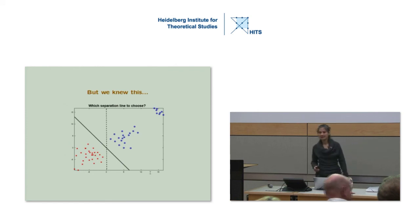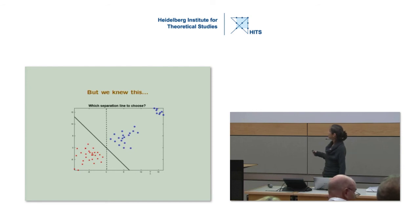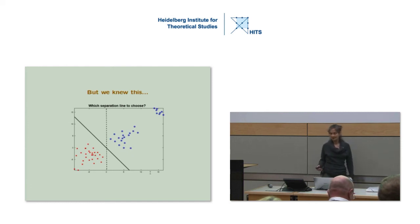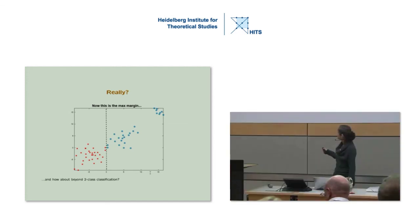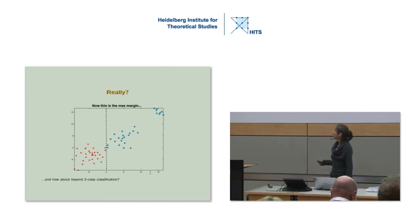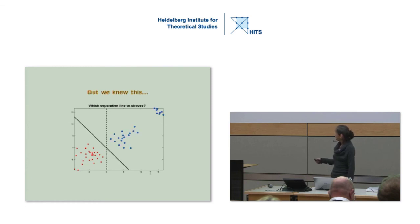You can say we already knew this, at least for two-class classification. Every textbook tells you to separate them by the maximum margin—that's what the SVM is doing. Well, yes, but not always. This is exactly the same data set with four more points added. If we go for the maximum margin, such points can fool us. The maximum margin classifier becomes this, but it should really have been the same as before.